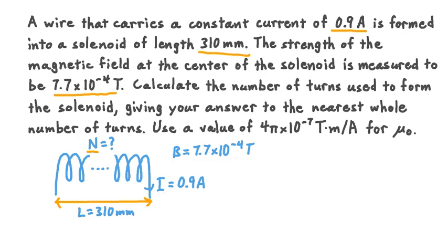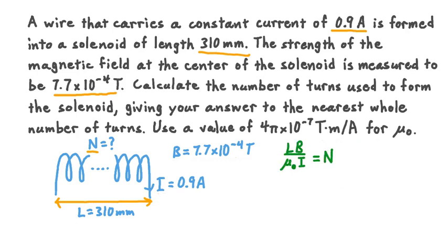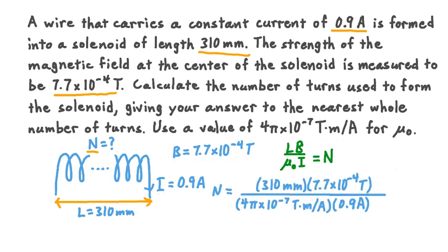In order to calculate capital N, the total number of turns, we recall the equation: the strength of the magnetic field at the center of a solenoid is given by mu-naught times the total number of turns times the current, all divided by the length. In our case we want to solve for N, so let's multiply both sides of the equation by L over (mu-naught times I). This means L, mu-naught, and I all cancel on the right, and we find that N equals L times B divided by mu-naught times I. We know L, B, and I, and we're given the value for mu-naught, so we can substitute all those values in.